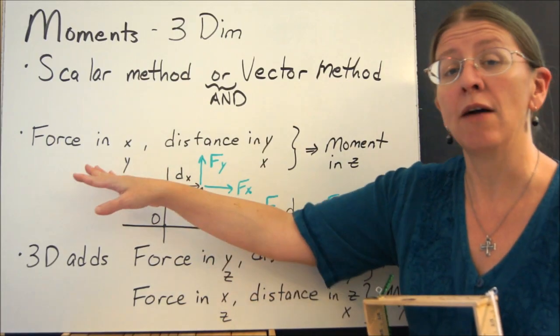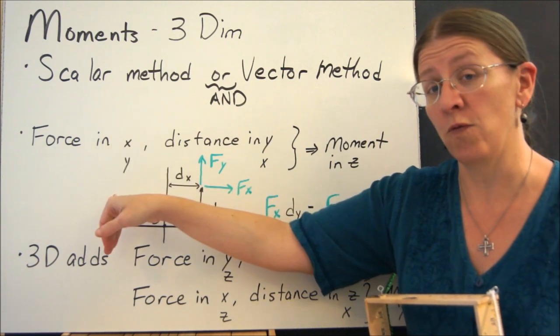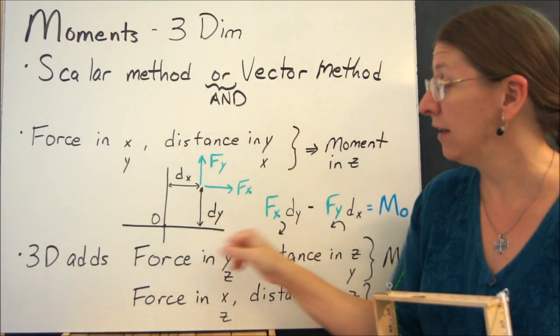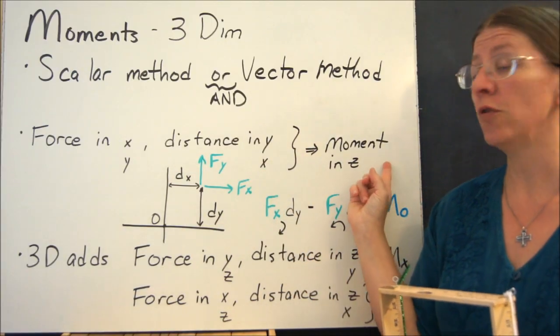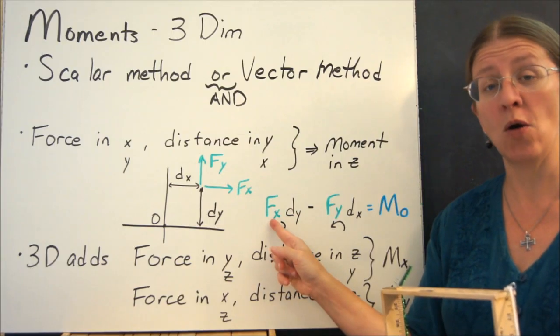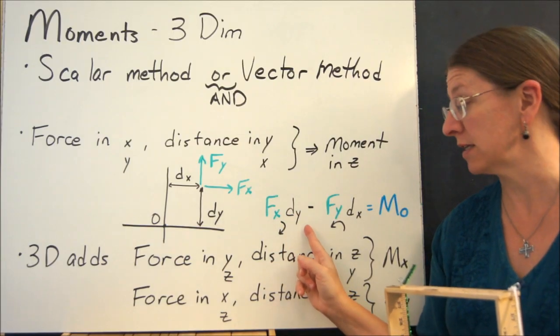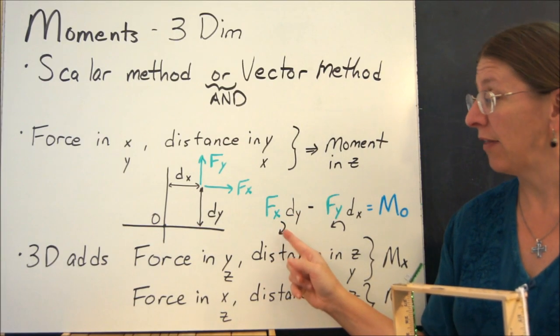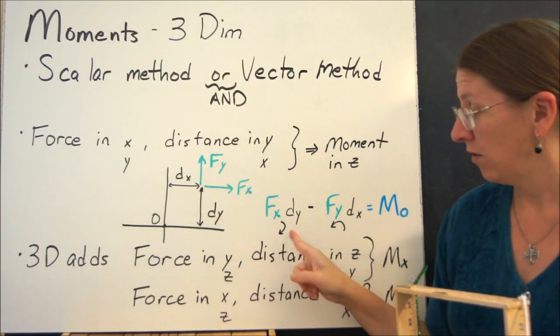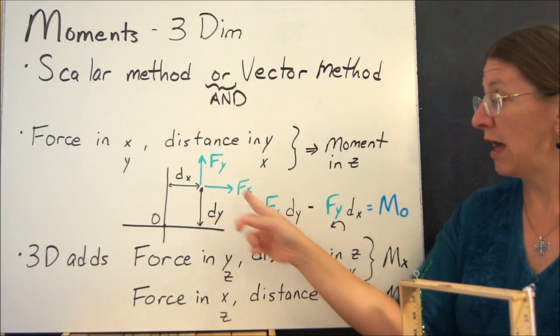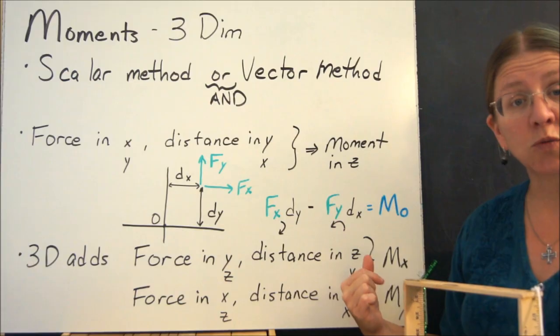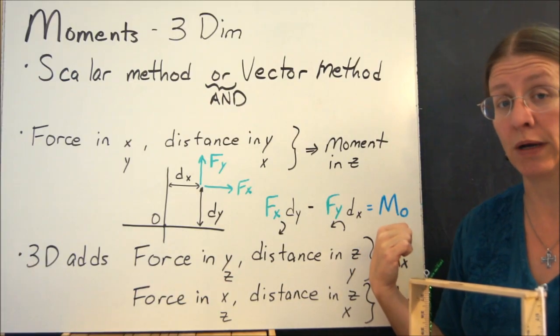In two dimensions, we have either a force in x and a distance in y, or a force in y and a distance in x. Either one of these will give you a moment in z. So we take the component of the force times the perpendicular distance, Fx times dy. That one happens to be rotating about the origin clockwise. Fy times dx happens to be going counterclockwise. I can subtract one from the other to get my moment about the origin.